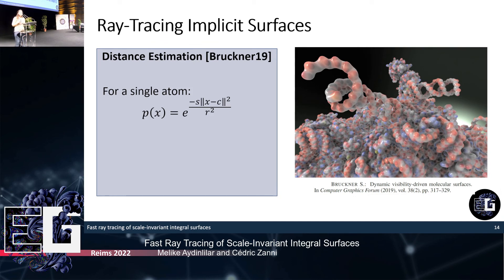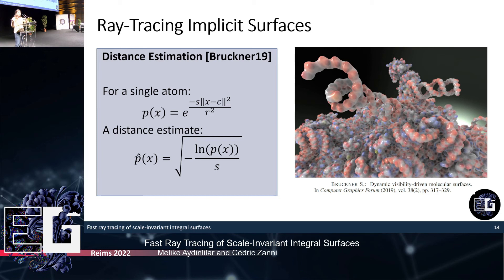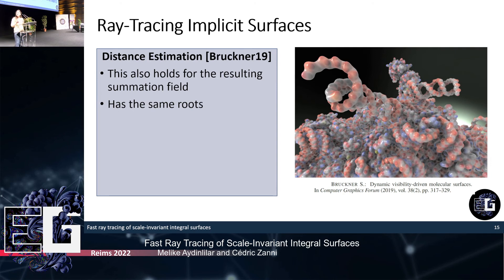A molecular rendering method uses Gaussian density and point primitives, showing that we can calculate a distance estimate for a single point primitive by inverting the field function — plugging the field function back into this inverted kernel gives a distance estimate. Importantly, this also holds for the final summed field: when we sum Gaussians together and plug the summed field back into this inverted kernel, we get a distance estimate with the same roots as the original field, which we can use directly for sphere tracing.